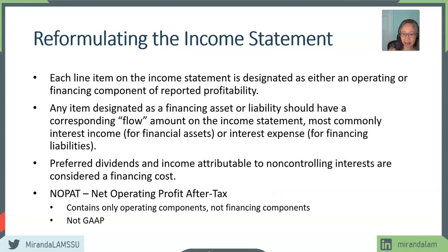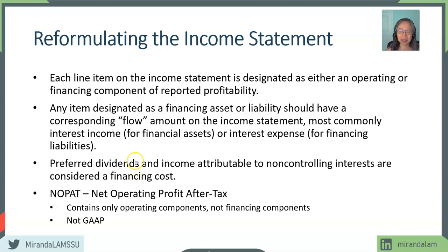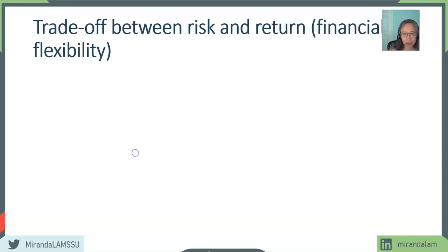Net operating profit after tax should contain only operating and no financing components. These are not GAAP — we are rearranging both the income statement and balance sheet in a way that enables us to do analysis that gives us the information we are looking for. You are going to see formulations of the income statement that are somewhat unconventional, but you will see this formulation very commonly in finance classes. The reason why we want to separate operating from financing is to highlight the trade-off between risk and return.